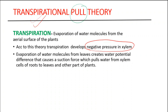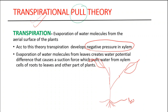Let us try to understand this theory with the help of a diagram. Consider a tree with its highest leaves at the top and roots at the bottom in the soil. The cells of xylem and phloem are arranged in a chain-like fashion from the roots to the tip of the leaf. If we consider the highest part of the leaf, water evaporates from there due to transpiration. The lowest cell near the soil has the highest concentration of water because the soil contains the highest amount of water.